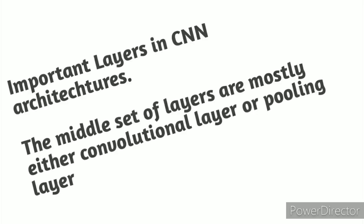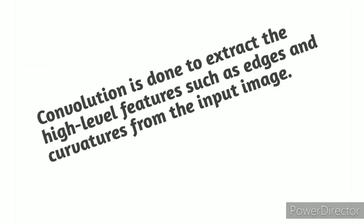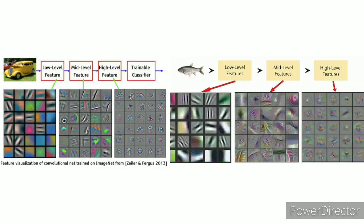Important layers in CNN architectures. The middle set of layers are mostly either convolutional layers or pooling layers. The RGB image is read as a 3D matrix: height by width by depth. The convolutional layer makes use of a set of learnable filters. A filter is used to detect the presence of specific features or patterns in the input image. Convolution is done to extract high-level features such as edges and curvatures. The first convolutional layers capture low-level features such as edges and color, while subsequent layers capture high-level features giving a broader understanding of objects in the images.